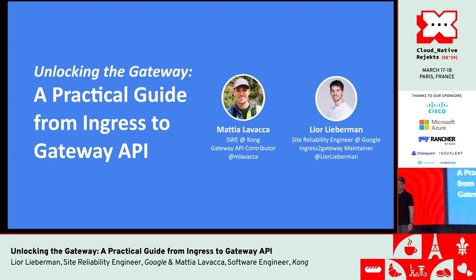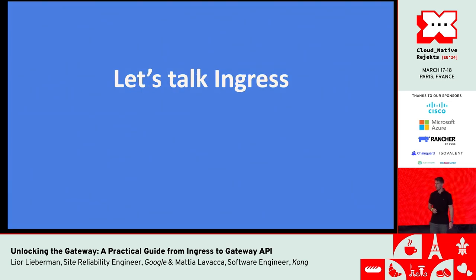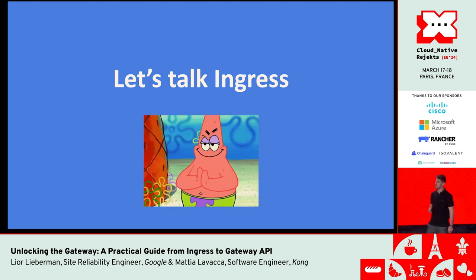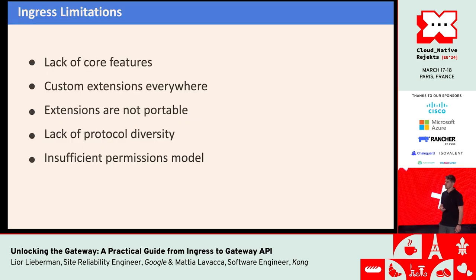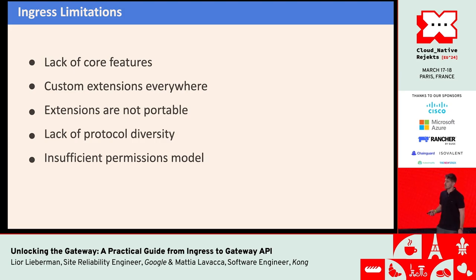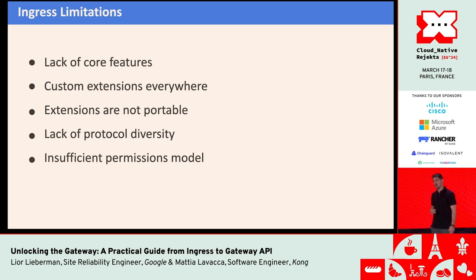Today we're going to provide a practical guide to migrate from ingress configuration to Gateway API. Ingress was great — it was widely adopted — but it has its own limitations. Ingress lacked core features, which led to custom extensions everywhere, usually in the form of annotations that weren't portable, so you couldn't easily switch to a different implementation. It also lacked protocol diversity and had an insufficient permission model.